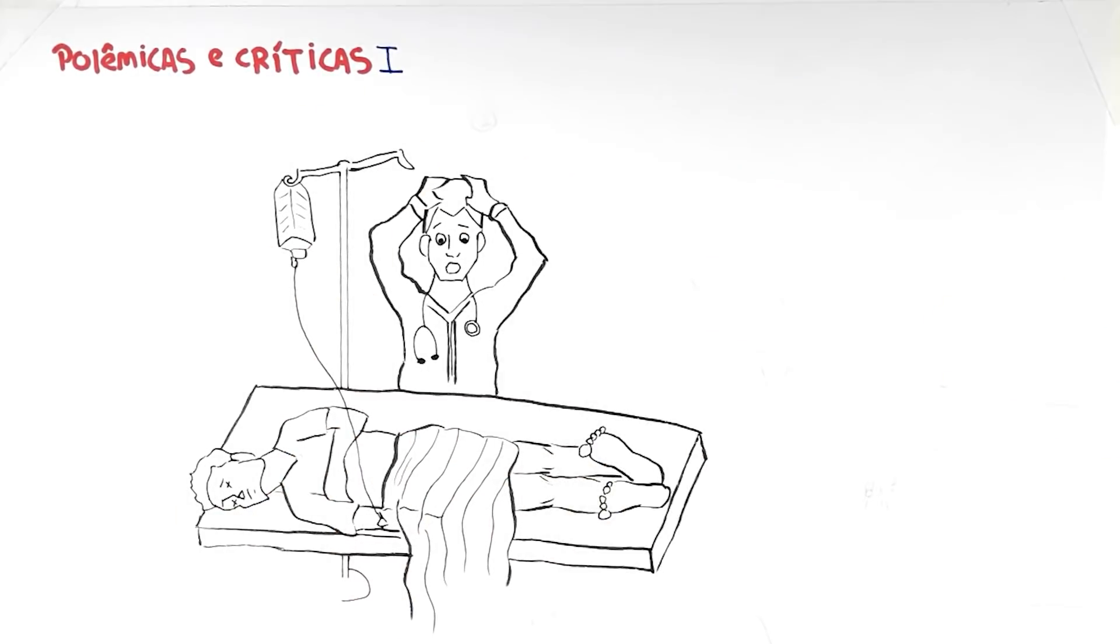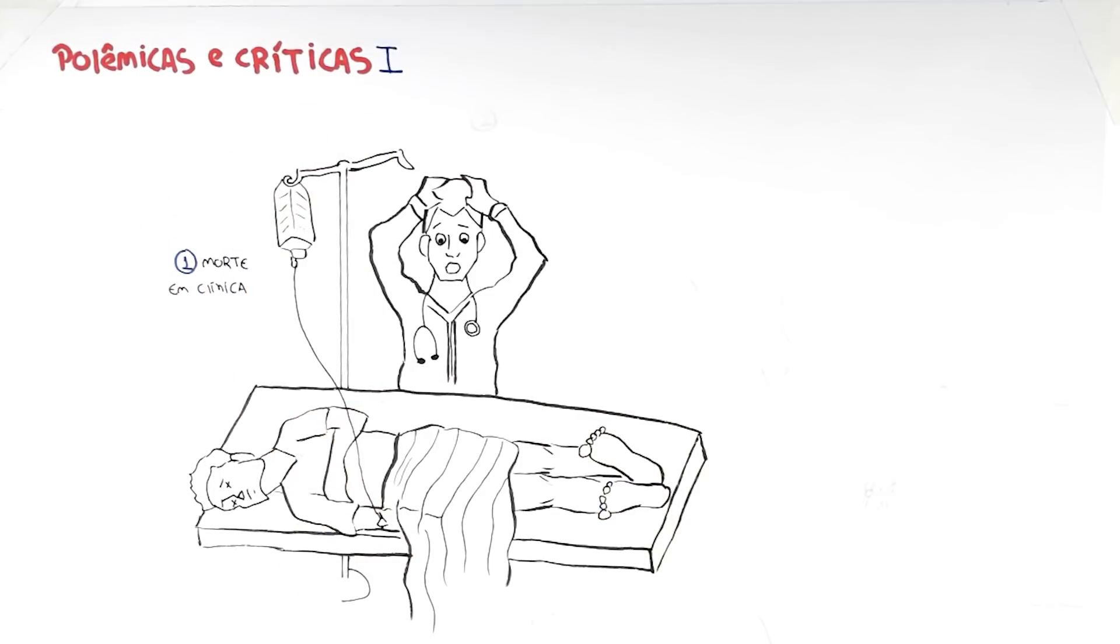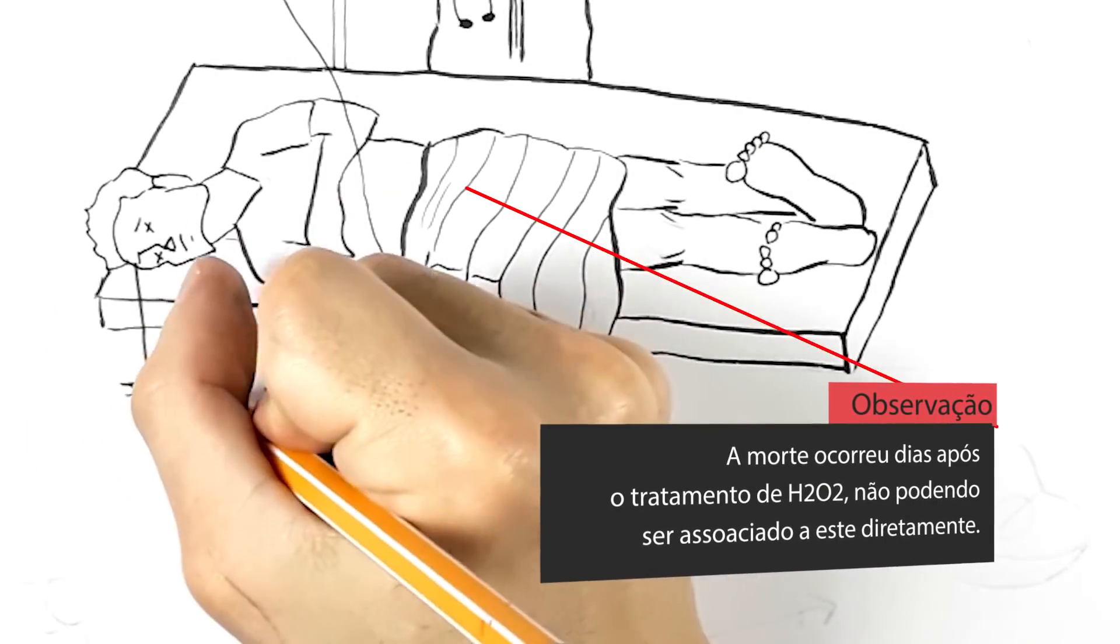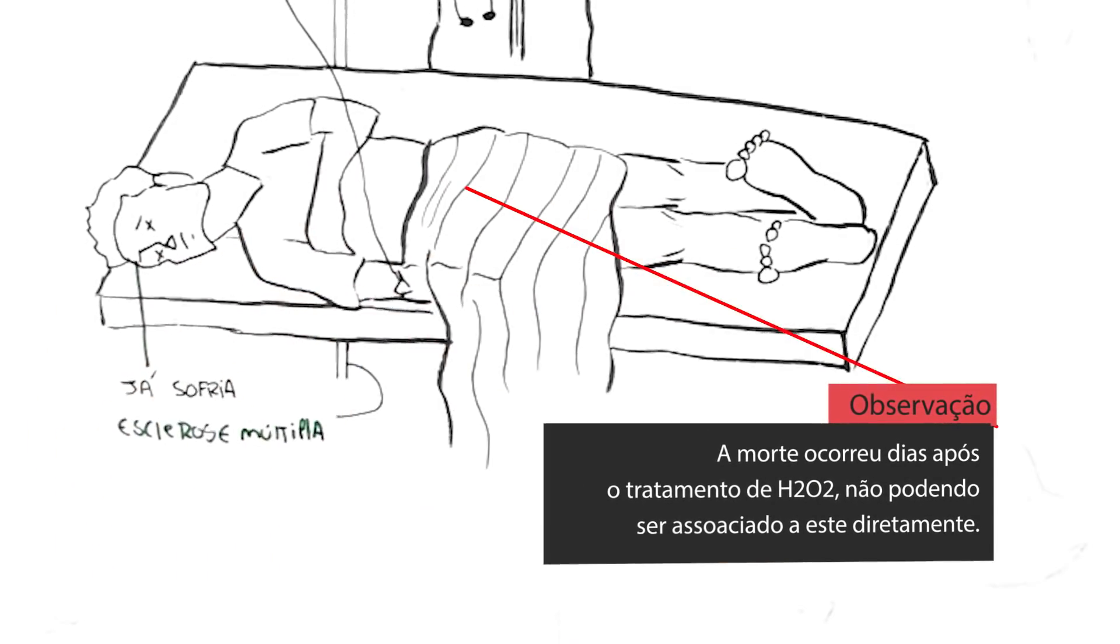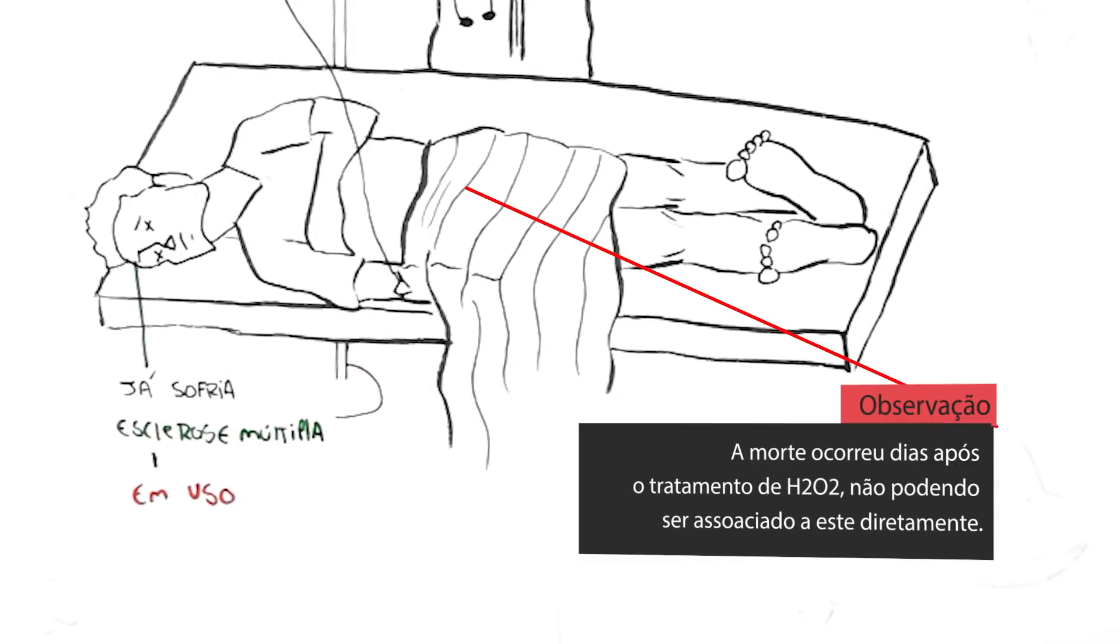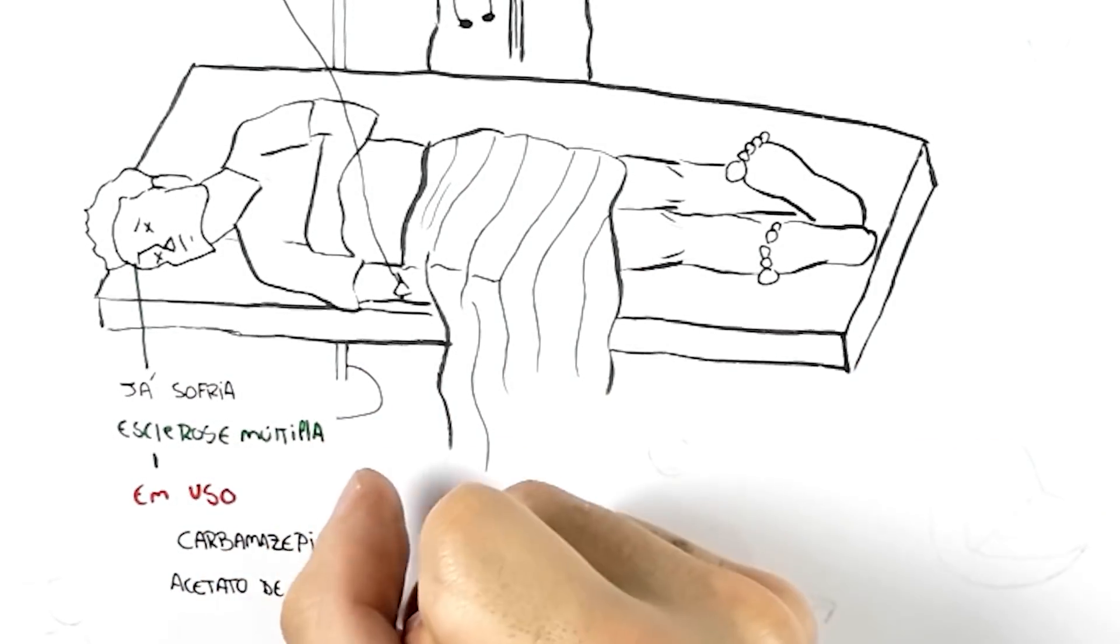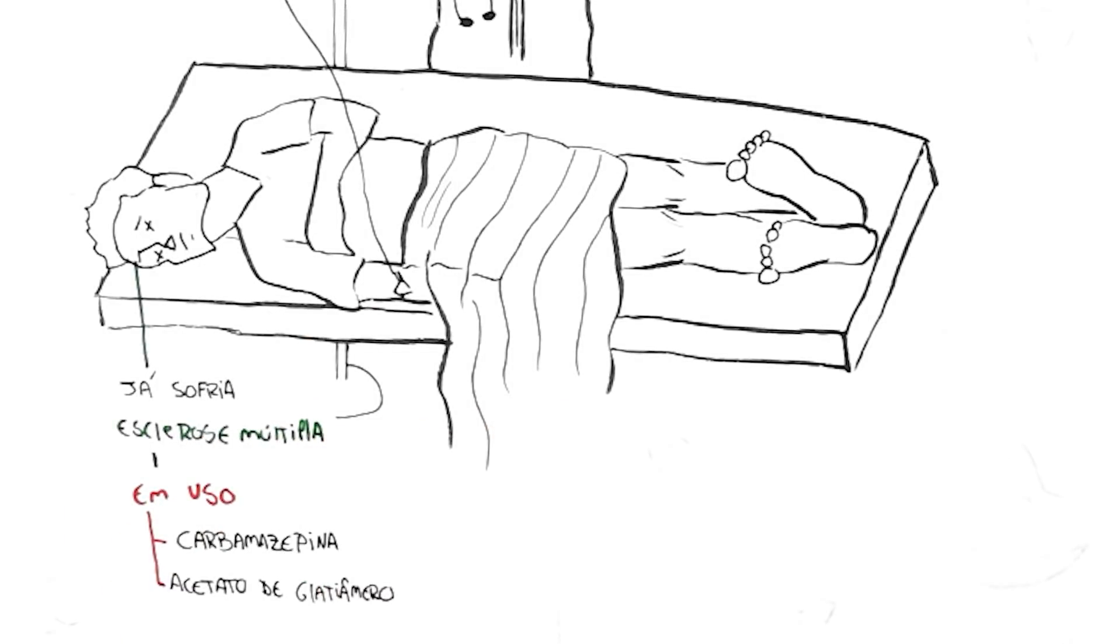One of the cases that appears is the death of a patient in a clinic in South Carolina. Studying the case better, we saw that the patient had multiple sclerosis and was using potentially fatal drugs such as carbamazepine and glatiramer acetate. But unfortunately, that's how it is: the parrot eats corn, the parakeet gets the blame.